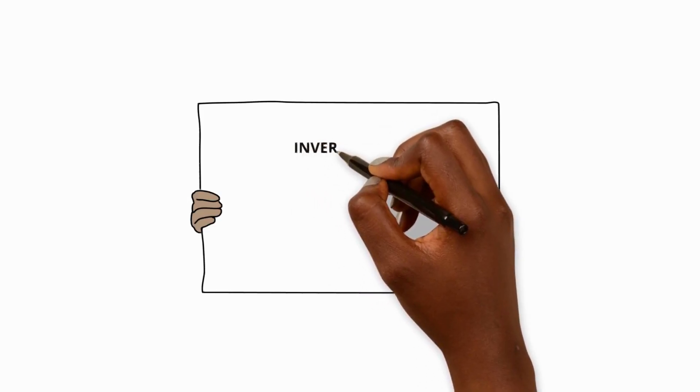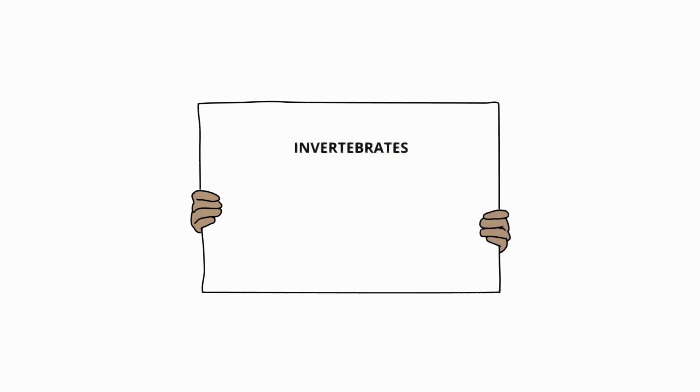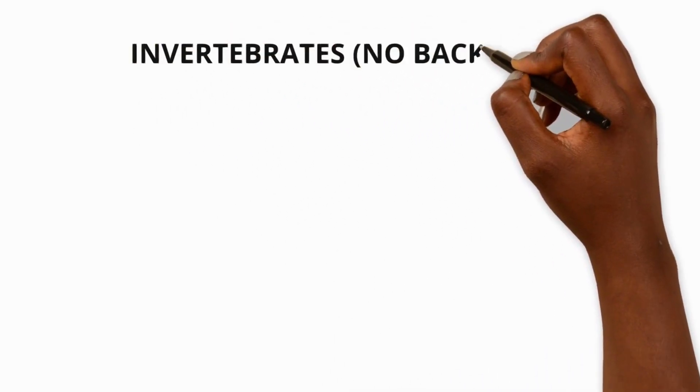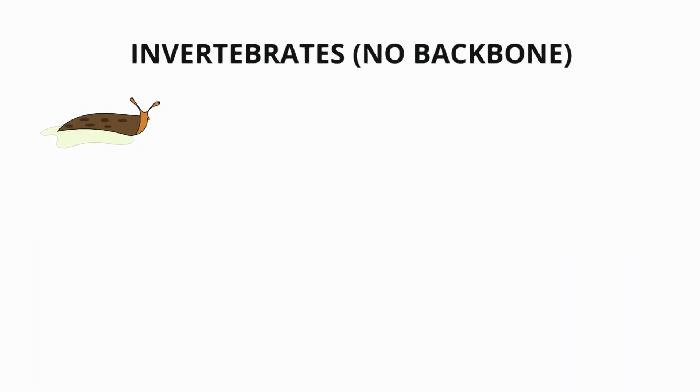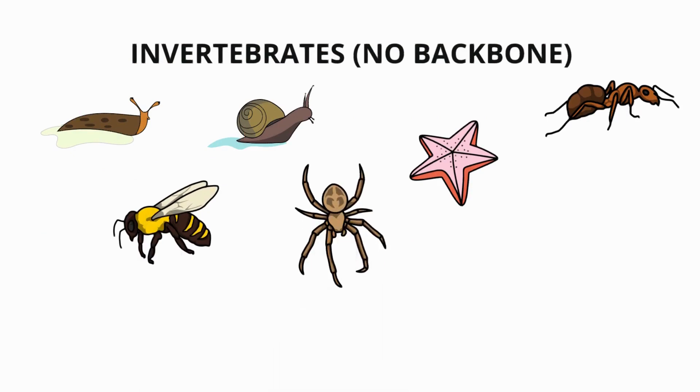Invertebrates. Now let's look at invertebrates, animals without backbones. Invertebrates come in all colours, shapes and sizes and can be found both inside and outside our homes. Let's dive into the five main types of invertebrates.